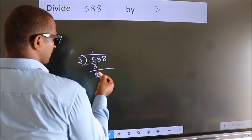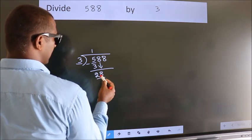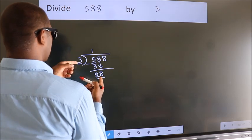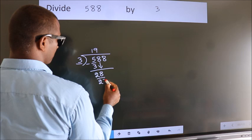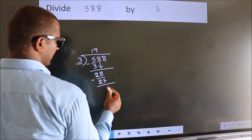After this, bring down the beside number. So, 8 down. So, 28. A number close to 28 in 3 table is 3 9s 27. Now, we subtract. We get 1.